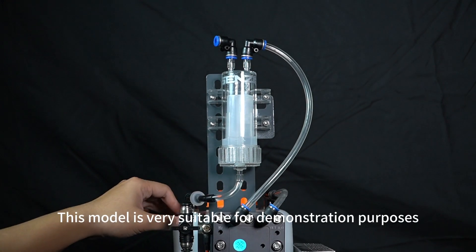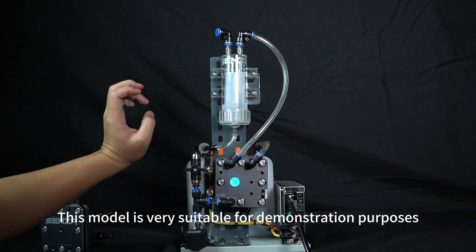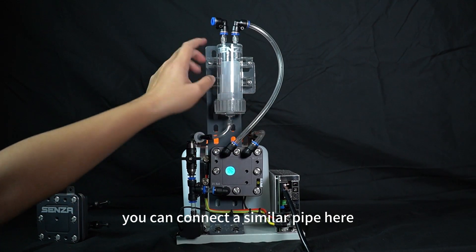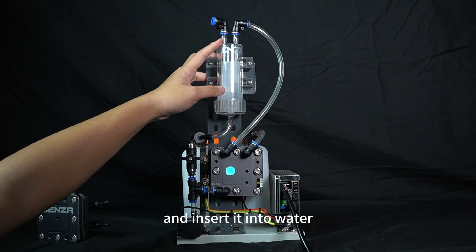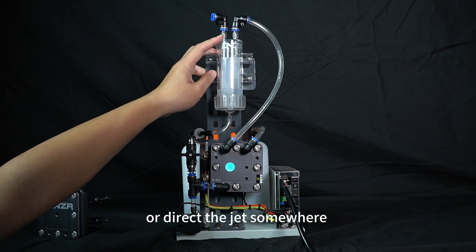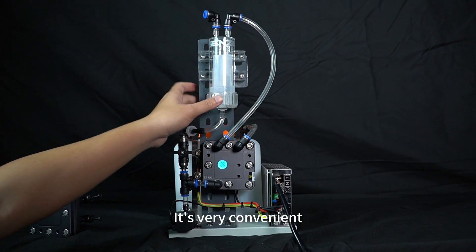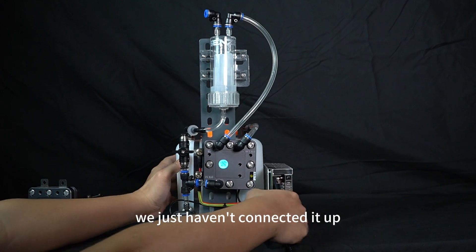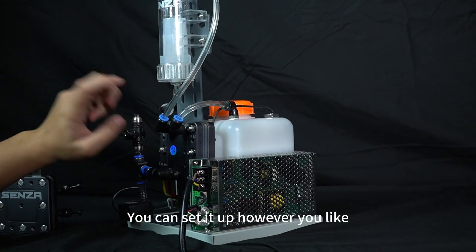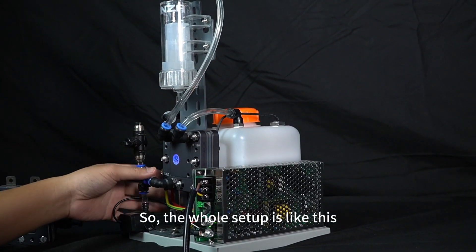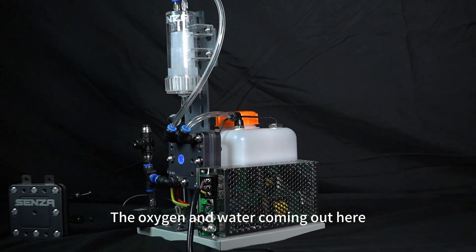This model is very suitable for demonstration purposes. For example, you can connect a similar pipe here and insert it into water, or direct the jet somewhere for a demonstration. It's very convenient. We just haven't connected it up. You can set it up however you like. So, the whole setup is like this. The oxygen and water coming out here.